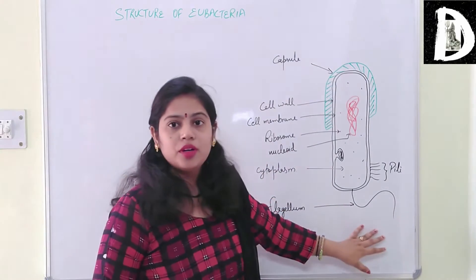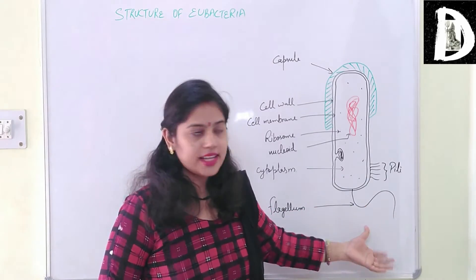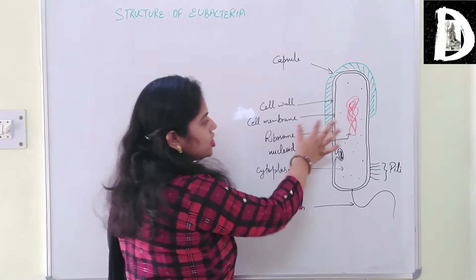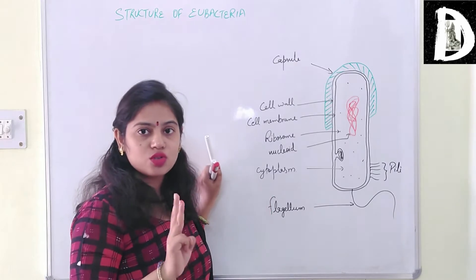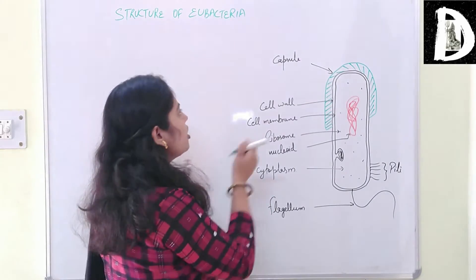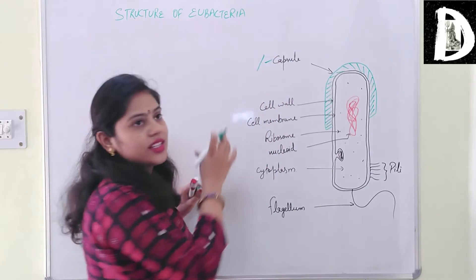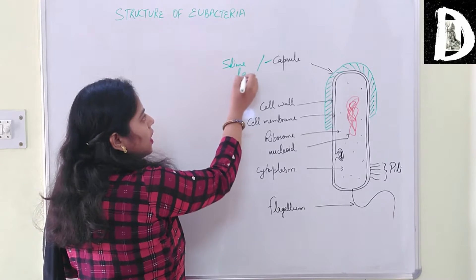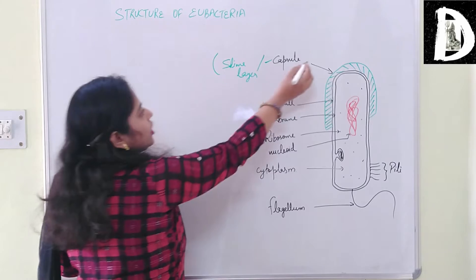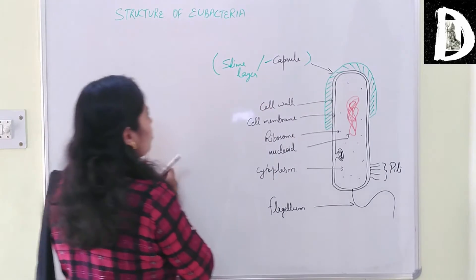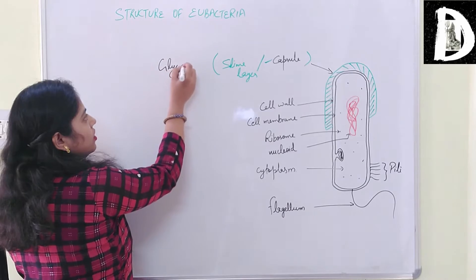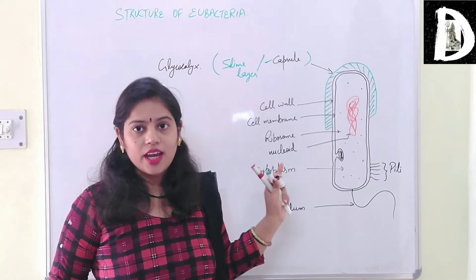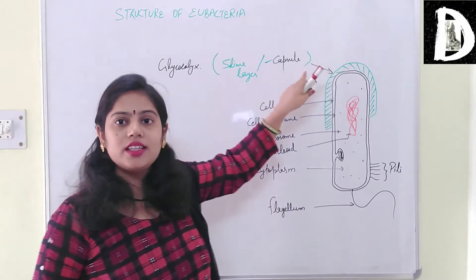This is the structure of a common eubacteria or a common bacterial cell. First I am showing the outer covering. In any bacterial cell there are three main components. The first is capsule, and we can also call it slime layer. The outermost layer is glycocalyx, and it can be either a slime layer or a capsule.